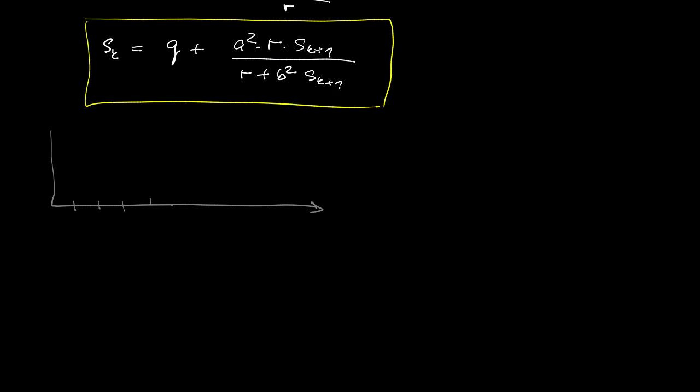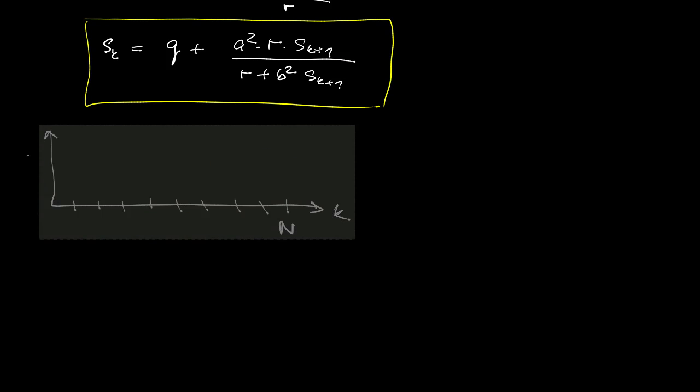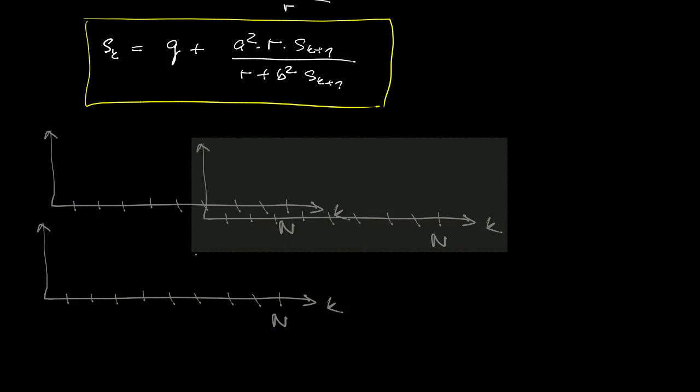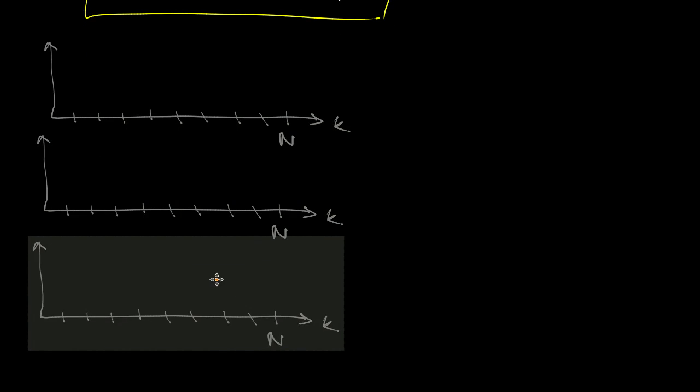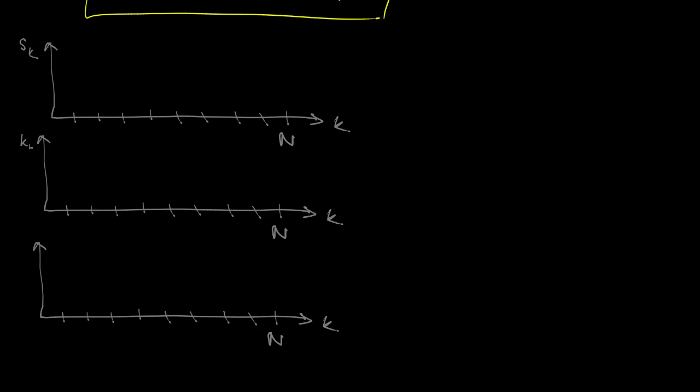Now if you implement this for some concrete A, B, Q and R this is how your relevant variables will evolve in time. So we'll start with S terms. These will be scalars. So we'll initialize them at the final time and this is how they could evolve. Typically what you would observe is that for most of the time if the horizon is long enough they will remain constant and the same holds for the time varying state feedback gain.